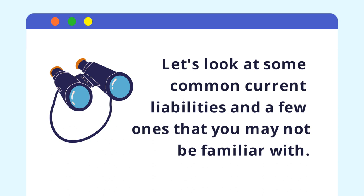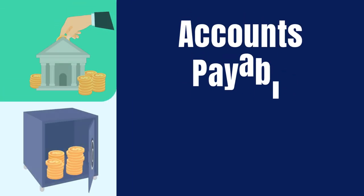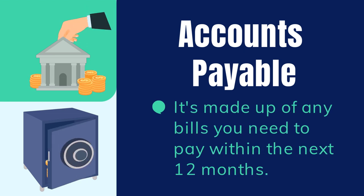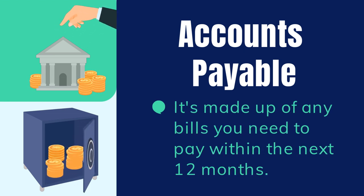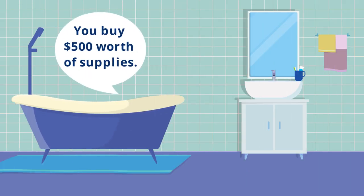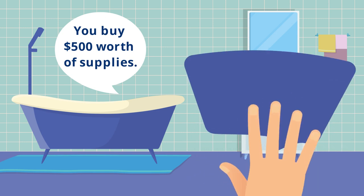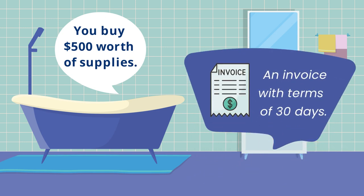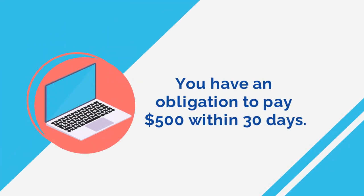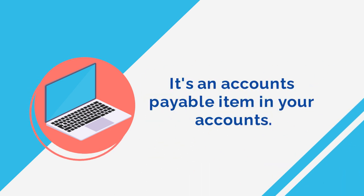One of the most common current liabilities is called accounts payable, and it's made up of any bills you need to pay within the next 12 months. Let's say that in your plumbing business you purchased $500 worth of supplies from a local hardware store, but instead of paying cash, they gave you an invoice with terms of 30 days. This means you now have an obligation to pay $500 within 30 days, which is well inside the next 12 months, so it becomes an accounts payable item in your accounts.